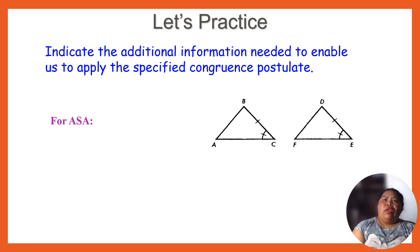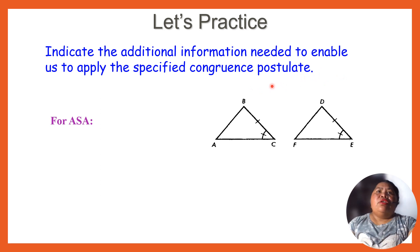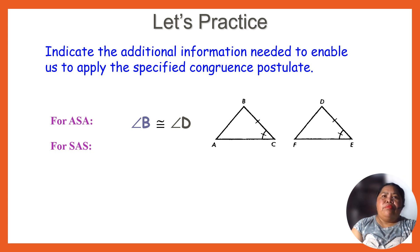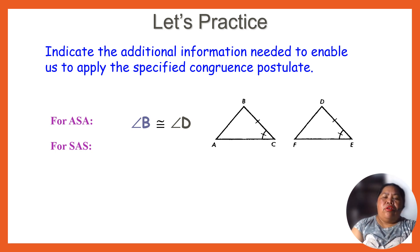Okay, let's practice: indicate the additional information needed to enable us to apply the specified congruence postulate. So here, for ASA — angle-side-angle — we have given angle B is congruent to angle D. For ASA we need the angle, so angle C is congruent to angle E, and of course we have segment BE and TE as the common side.